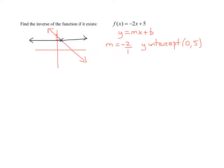So now we know the inverse exists. All we have to do is go find the inverse. Remember the steps for finding the inverse. Step one is you replace f of x with y. So we're going to write our function as y equals negative 2x plus 5.